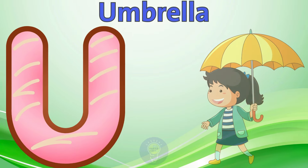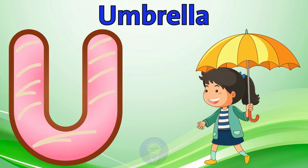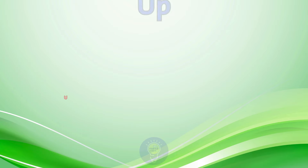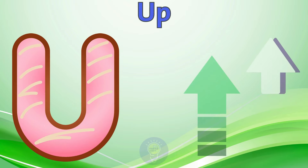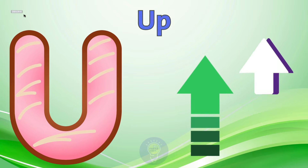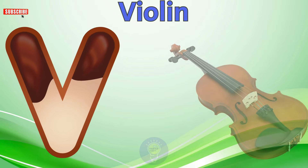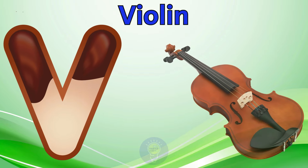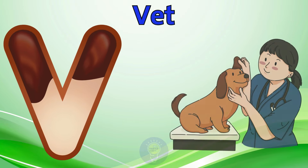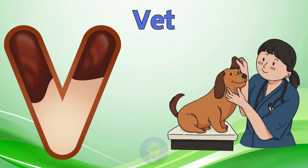U is for Umbrella. U, U. Umbrella. U is for Up. U, U. Up. V is for Violin. V, V. Violin. V is for Vet. V, V. Vet.